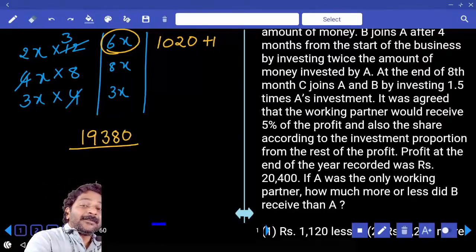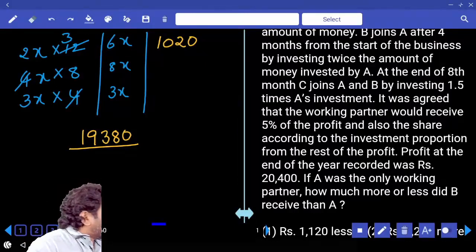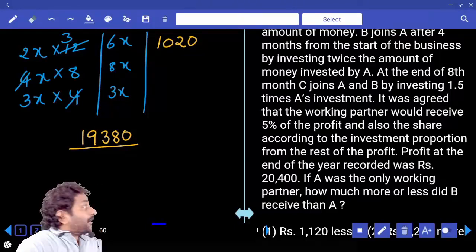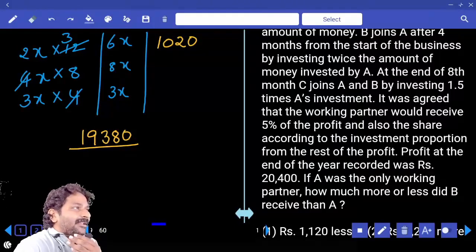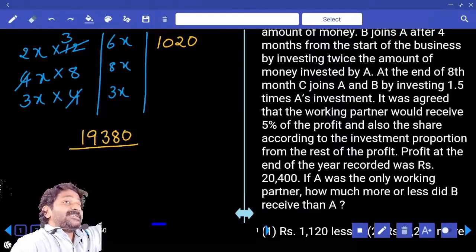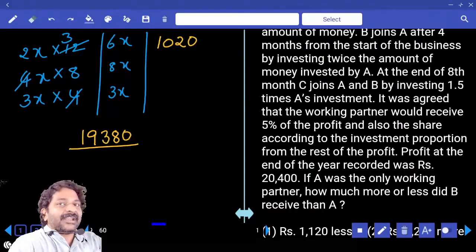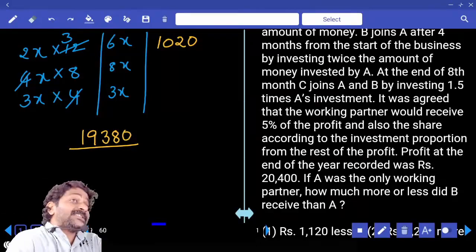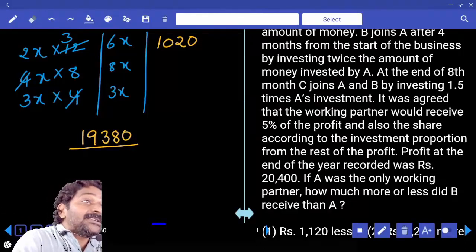But the problem is here, out of this 19,380 remaining profit, A and B share in 6 parts and 8 parts. Correct? So now out of this 19,380, who is getting more? B is getting more. How many parts?